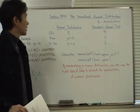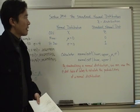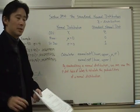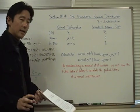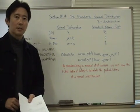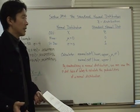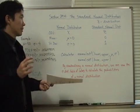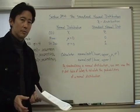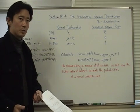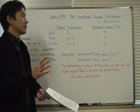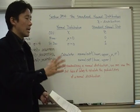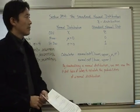Let's go ahead and start off with section 29H, which is the standard normal distribution. Notice that in the previous section we talked about just the normal distribution, but now we're going to be talking about the standard normal distribution. There's a very important difference you'll need to realize. The standard normal distribution is one of the different types of normal distribution curves. All key characteristics of the normal distribution curve also apply to the standard normal distribution curve, except for certain specific details that must be in place.